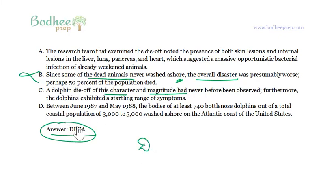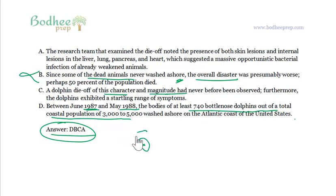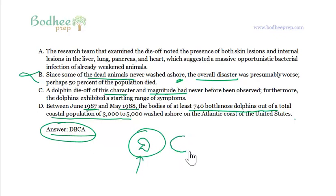Between June 18, 1987 and May 1988, the bodies of at least 740 bottlenose dolphins, out of a total coastal population of 3,000 to 5,000, washed ashore on the Atlantic coast of the US. So D is very much likely to start the paragraph. Many of you might feel you can immediately place C as the next sentence.